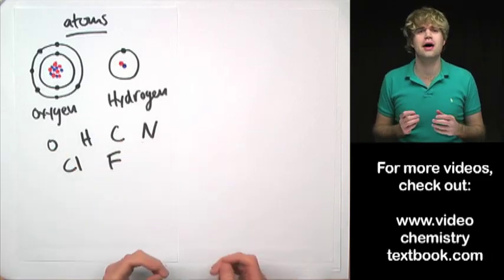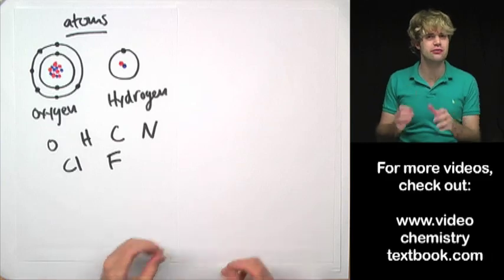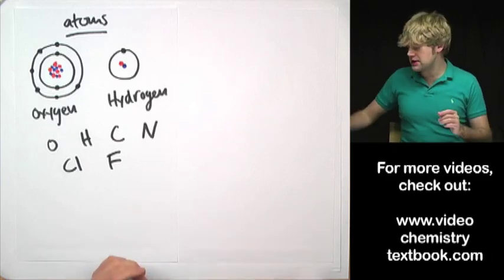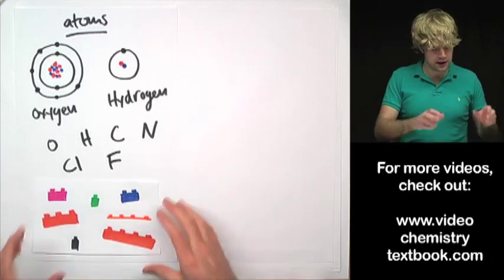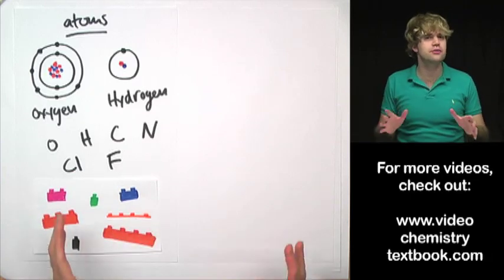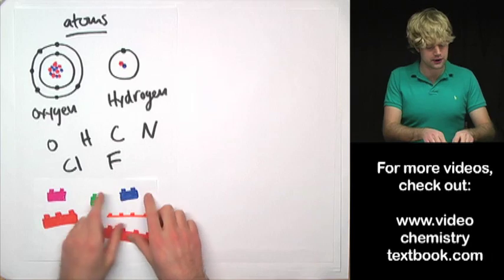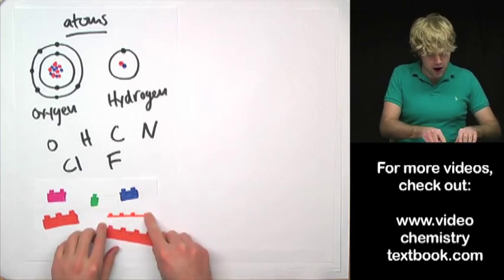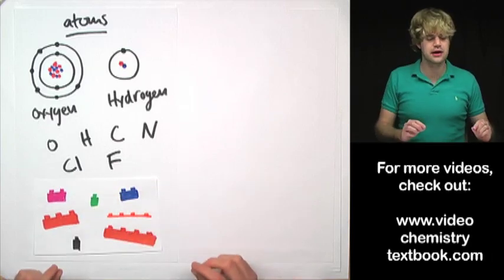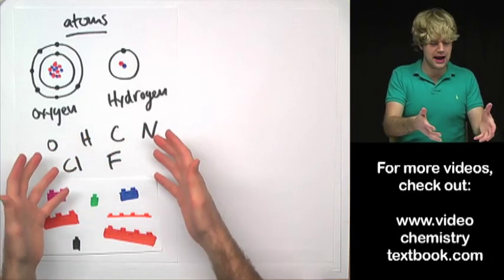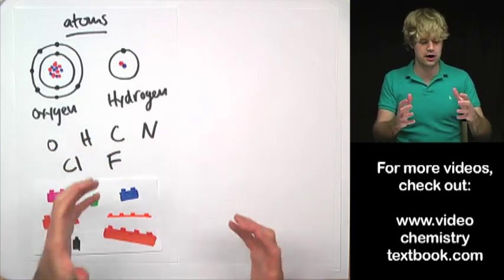All of these atoms, all these types of atoms, are all a little bit different. I like to think about these like Lego blocks, right? They're all these different types of Lego blocks, but they're all a little bit different. They're different colors. They're different sizes. Some are tall, others are like flat and skinny.